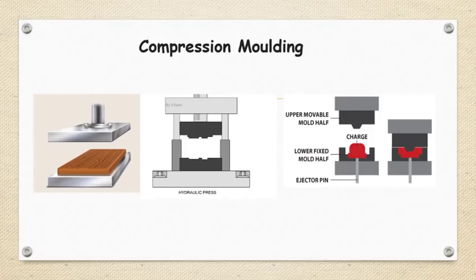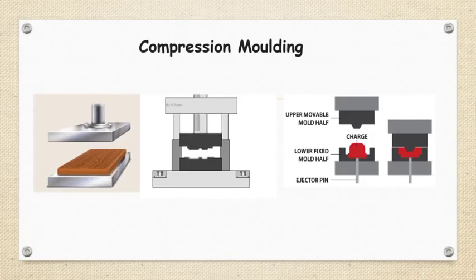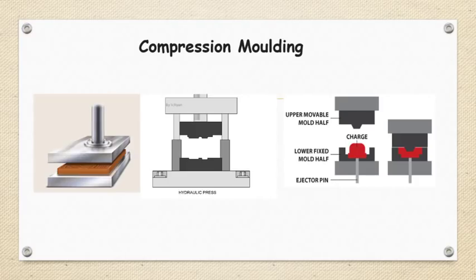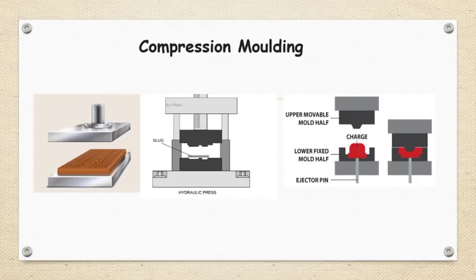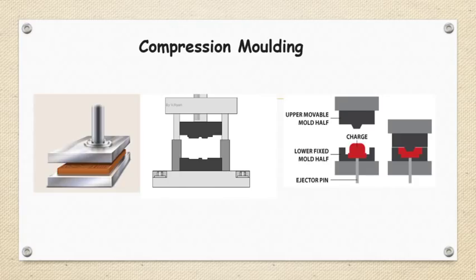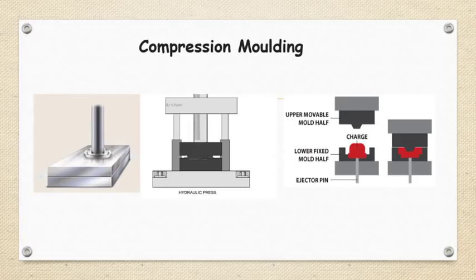For today we will discuss two processes used for processing thermosetting plastic material. The first one is compression molding. Compression molding is the most common process used with thermosetting material and is usually not used for thermoplastic materials.